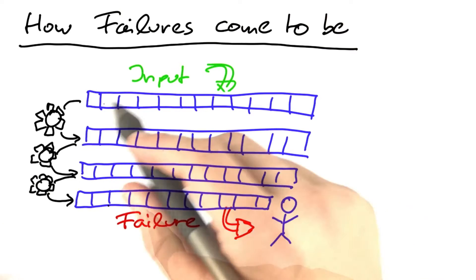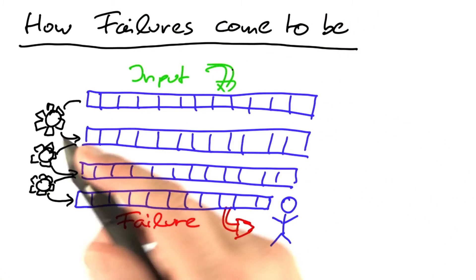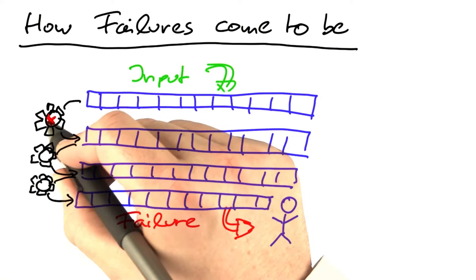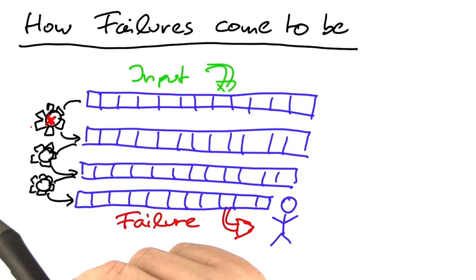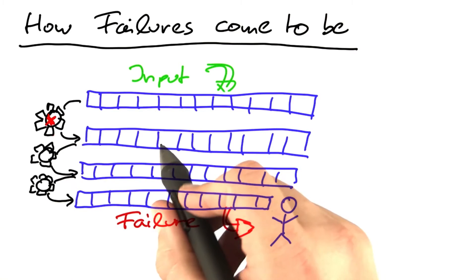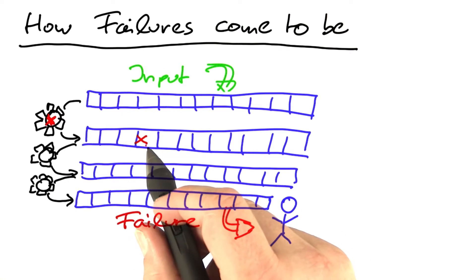Now, however, since in the beginning we have a normal input and in the end we have a failure, there must be a defect somewhere in our program that actually causes the problem. So let me assume that this statement we're executing here actually has a defect. What happens is that now, when executed, it introduces an error in the program state, which we call an infection.